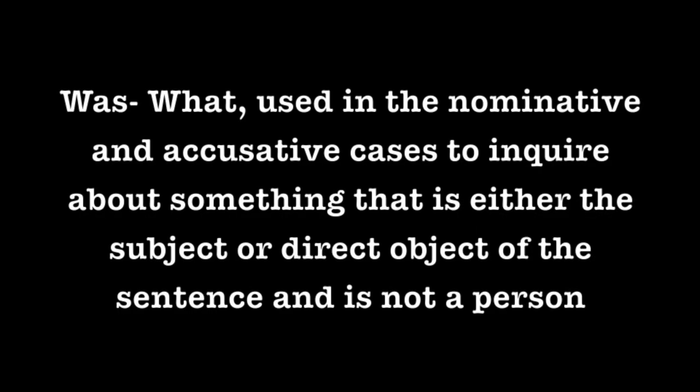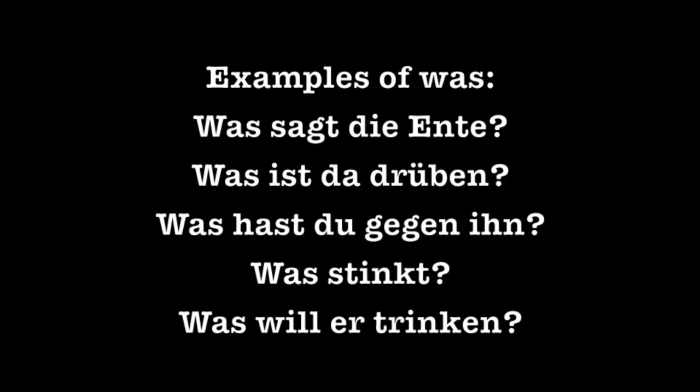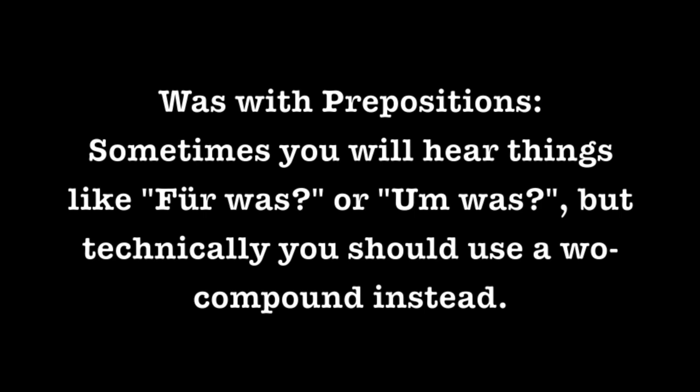The next one is Was, which means 'what' in German. It's used in the nominative and accusative cases to inquire about something that is either the subject or the direct object of a sentence and is not a person. Examples: Was sagt die Ente (what does the duck say?), Was ist da drüben (what is over there?), Was hast du gegen ihn (what do you have against him?), Was stinkt (what stinks?), Was will er trinken (what does he want to drink?). In colloquial language you can use prepositions with Was, such as 'für was' or 'um was', but technically you should use a Wo-compound instead.